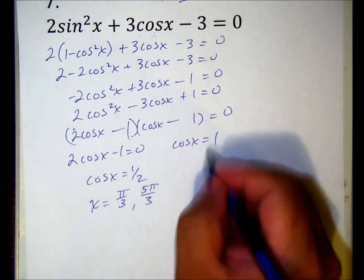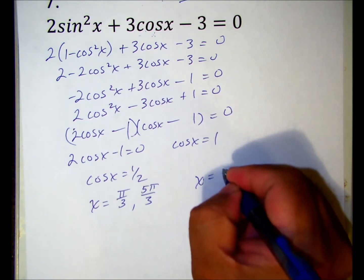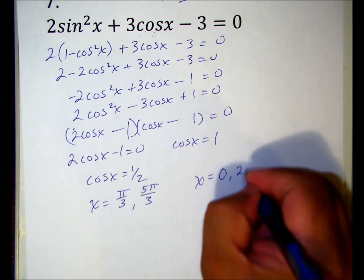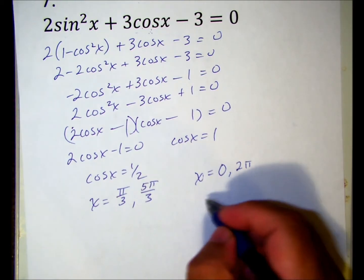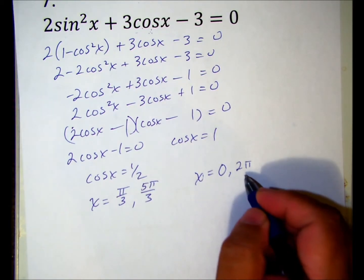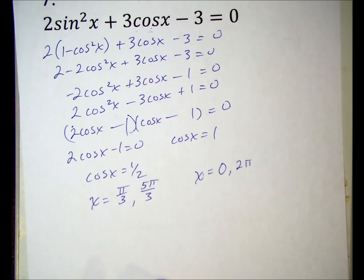Here, cosine x equals one. That happens once in a period of zero to two pi, and that's at zero - wait, it happens twice, zero and two pi. It depends on when I chose my range. That's number seven. It's going to be ugly, so we'll put that one on its own.